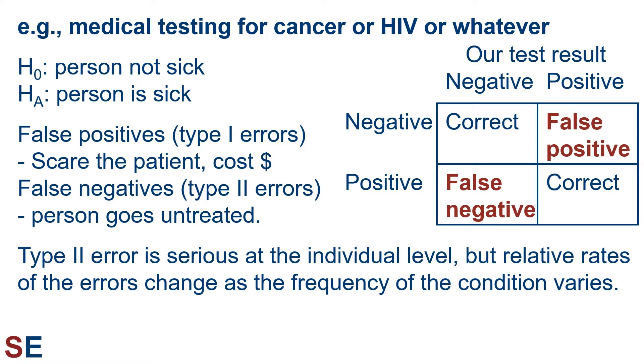The type 2 error would be a false negative. The person has the condition, but the test result says they don't. The negative consequence of this is that they would go untreated until some later time when their symptoms have gotten worse and they pursue more tests. In this scenario, the type 2 error seems more serious, but the relative costs to society can change as the frequency of the condition varies.